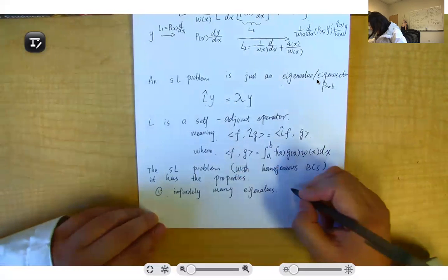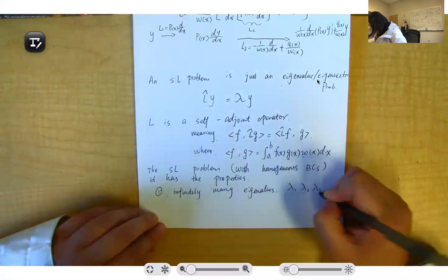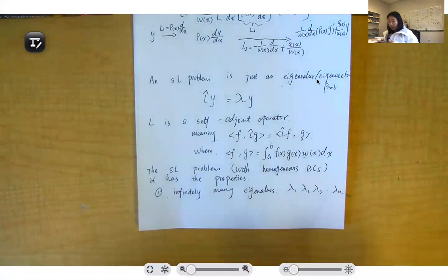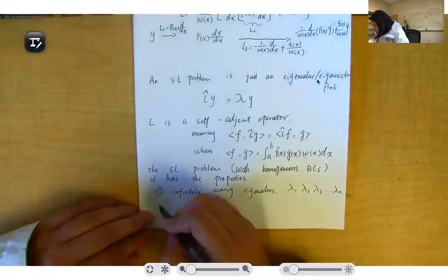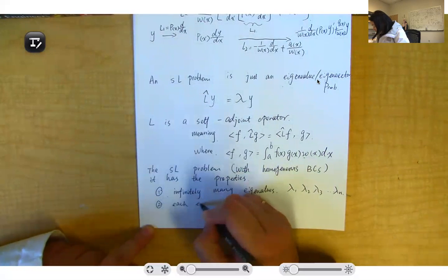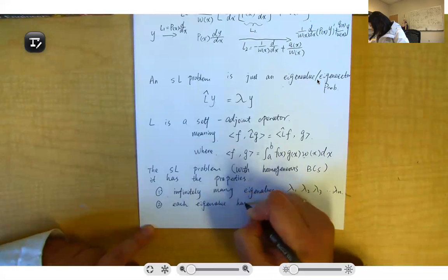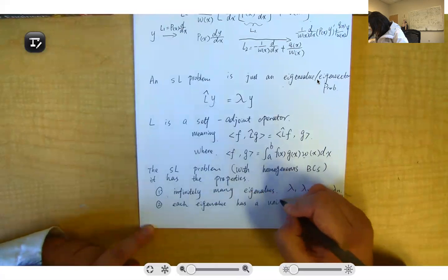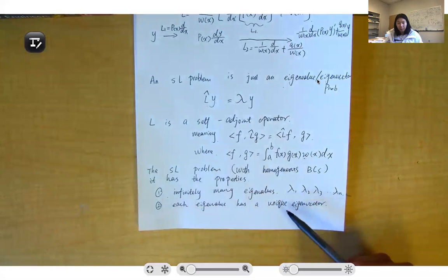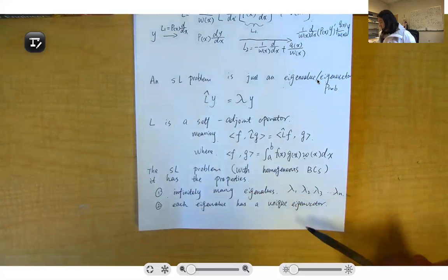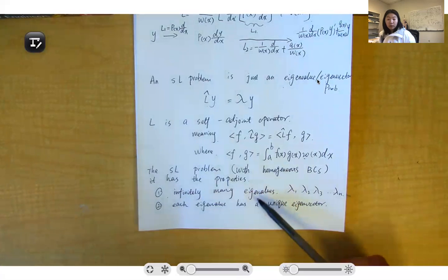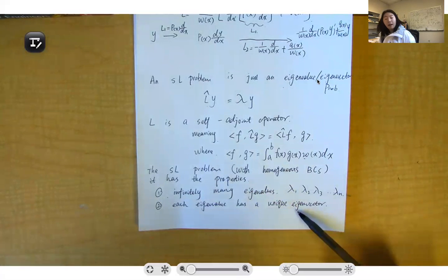There are infinitely many eigenvalues, lambda one, lambda two, lambda three, and so on. The second property is that each eigenvalue will have a unique eigenvector. So each lambda will correspond to a unique eigenvector, meaning that with infinitely many eigenvalues, you will also have infinitely many unique eigenvectors.